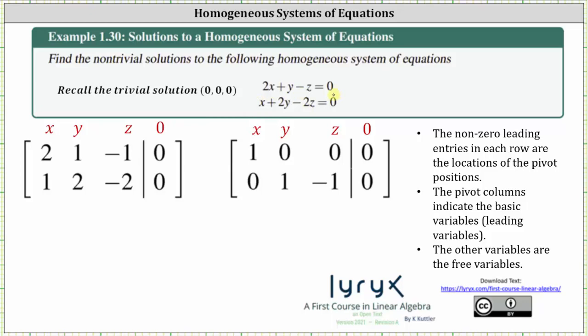Equation one gives us the first row: 2, 1, −1, 0. The second equation gives us the second row: 1, 2, −2, 0. Next, we write the augmented matrix in reduced row echelon form, shown on the right. The non-zero leading entries in each row are the pivot positions — in this case column one and column two. Therefore, x and y are the basic (or leading) variables, and the remaining variable z is a free variable.